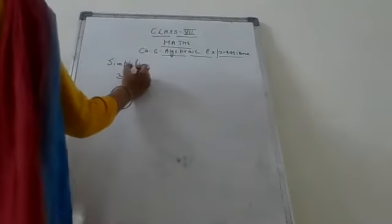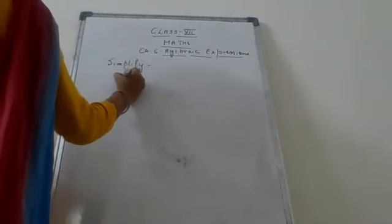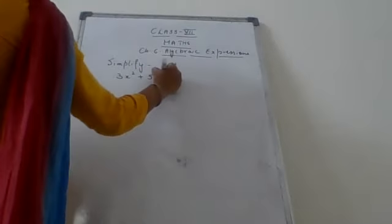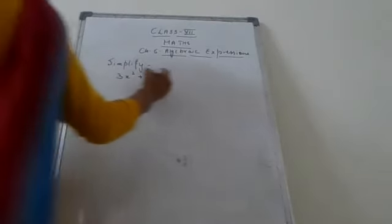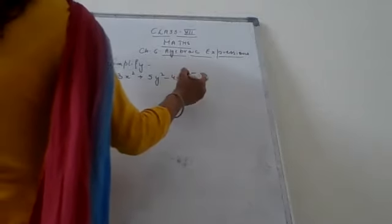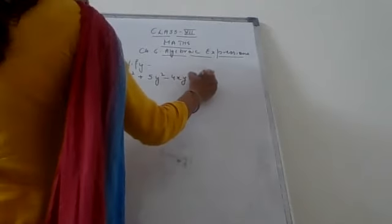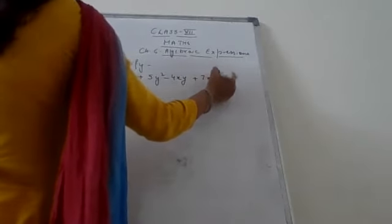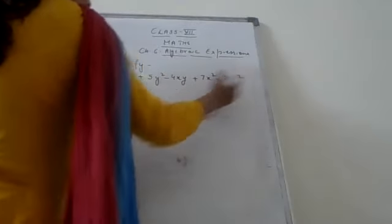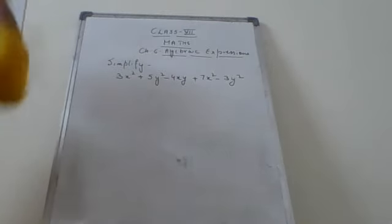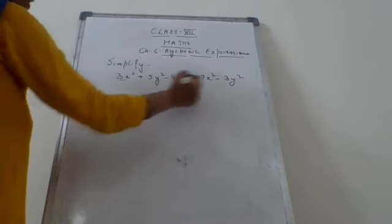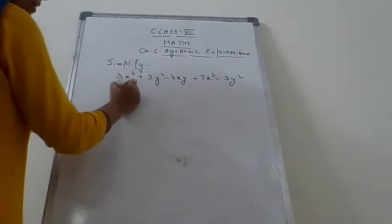Simplify 3x squared plus 5y squared minus 4xy plus 7x squared minus 3y squared. In simplification, what we will do first is collect all the like terms in brackets.